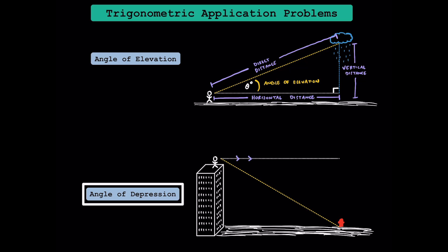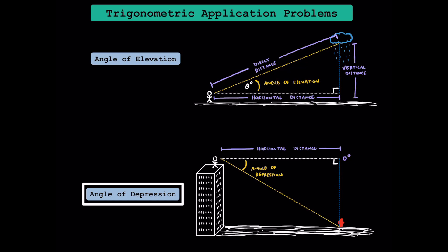Whenever you have word problems with angle of depression, you have scenarios where you're typically looking down instead of looking up. Here you can see our horizontal line of sight is at the top of our diagram. This segment over here represents the distance between the person and this fire hydrant on the ground. So this right here is our angle of depression. Connecting these with a segment over here, we can create a right triangle. Here's our horizontal distance, here's our vertical distance, and this over here is going to be our direct distance. Since this triangle is sometimes trickier for people to use, we can try to remember our understanding of parallel lines and transversals.